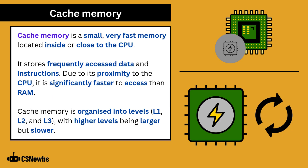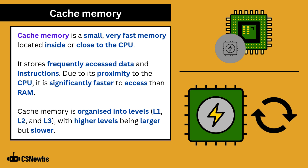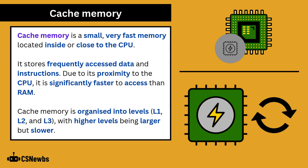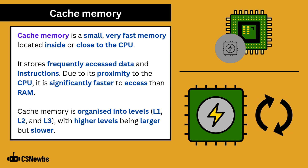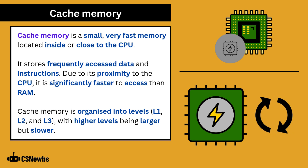The OCR A-level specification lists three main components of the CPU, but in modern CPUs there is also cache memory. This will appear in the CPU performance video in more detail, but we'll take a sneak peek now. Cache memory is small, very fast memory located inside or close to the CPU.